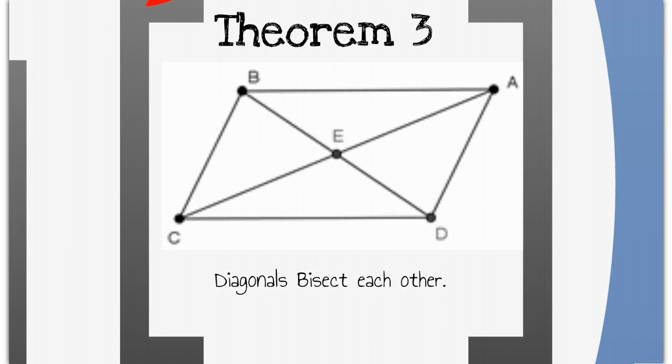The next theorem, and this is the last one specific to parallelograms, is about the diagonals. If you draw in both sets of diagonals, you'll find out that point E is the midpoint of both diagonals where they intersect each other. The way we say that is: the diagonals bisect each other.